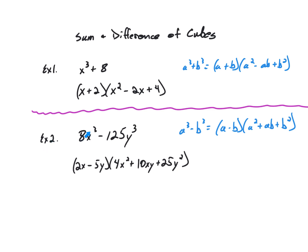In example 2 we have 8x cubed minus 125y cubed, which is a difference of two cubes. The cube root of 8 is 2 and the cube root of x cubed is x, so the cube root of 8x cubed is 2x — that is a. The cube root of 125 is 5 (since 5 times 5 times 5 is 125) and the cube root of y cubed is y, so b equals 5y. Applying the formula: a minus b is (2x minus 5y), then a squared is 4x squared, plus ab which is 2x times 5y equals 10xy, plus b squared which is 25y squared. So the factored form is (2x minus 5y)(4x squared plus 10xy plus 25y squared).